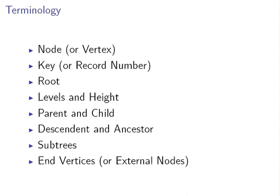We're going to look at a node or a vertex as it's also called, a key or a record number, the root, levels and height, parent and child, descendant and ancestor, subtrees and end vertices.